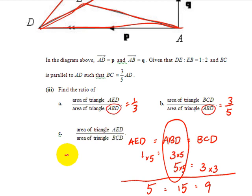And to answer this question, AED is to BCD. So answer, 5 is to 9. So this very last strategy is what we call overlap.